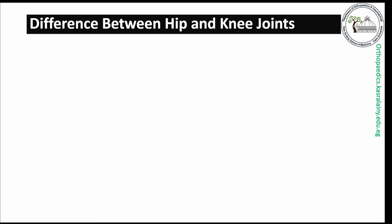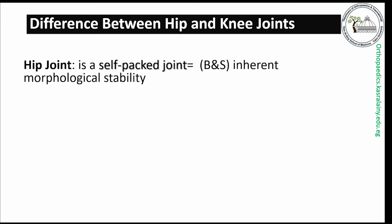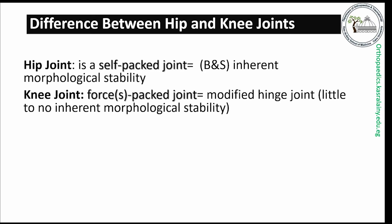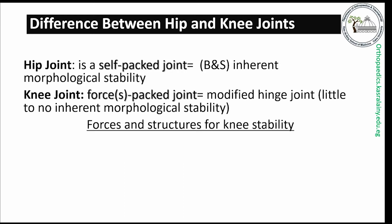The main difference between the hip and knee joints is the absence of inherent stability of the knee, contrary to the ball and socket hip joint. So the knee joint needs structures and forces to keep its stability during stance and motion.